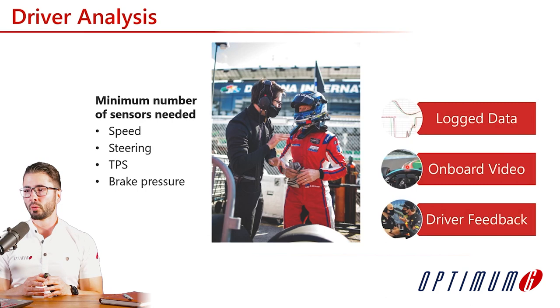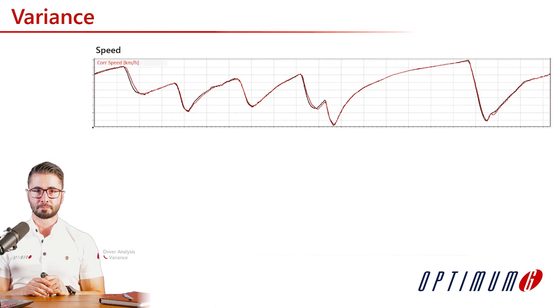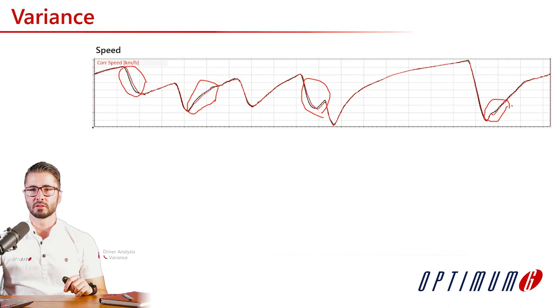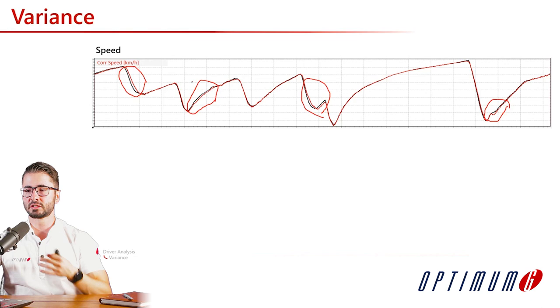We can use proper log data, onboard video, and driver feedback. When starting to analyze drivers, the easiest way is by looking at speed traces, because we can identify where each driver is gaining or losing time. If you have two drivers to compare, this makes the process very straightforward. However, visually inspecting speed traces is not a very automated process — we are barely visualizing the data we have.